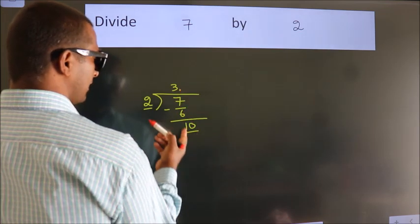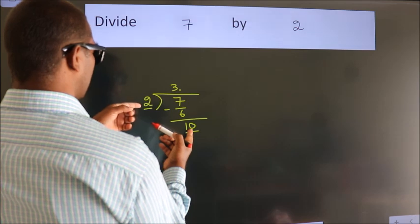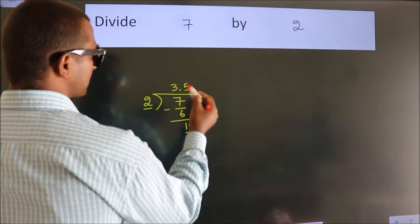So 10. When do we get 10? In the 2 table, 2 fives, 10.